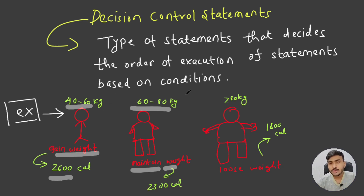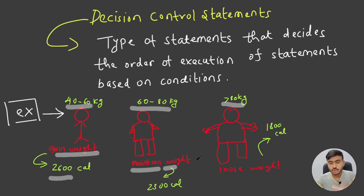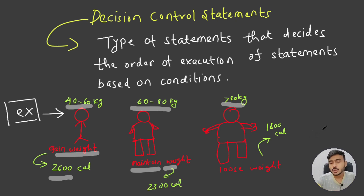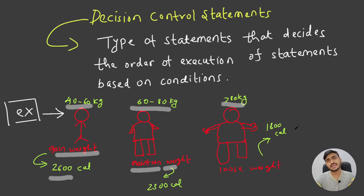If your weight is greater than 80 kg, then ideally you should think of losing some weight. In that case, you should eat a calorie-deficit diet — maybe less than 2000 calories, or around 1800 calories per day.